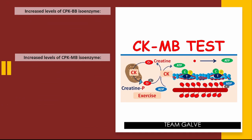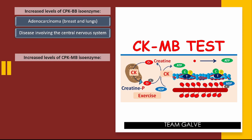Next, CK-BB and CK-MB. When CPK-BB is increased, the probable disorders to rule out include: adenocarcinoma of the breast and lungs, disease involving the central nervous system causing brain tissue damage, and pulmonary infarction. These are the probable disorders when there is an increase in CPK-BB isoenzyme.